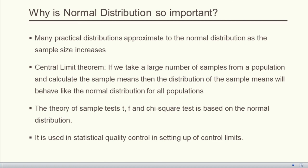Before concluding, let me explain why so much importance is attributed to normal distribution. First, many practical distributions approximate the normal distribution as sample size increases. Second, there is a very important theorem called the Central Limit Theorem, which states that if we take a large number of samples from a population and calculate the sample means, the distribution of those sample means will behave like a normal distribution for all populations — irrespective of the type of distribution the population follows. This has much significance in statistical inference.